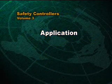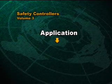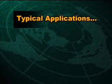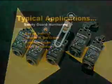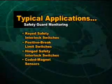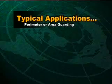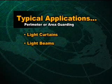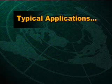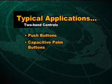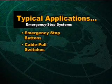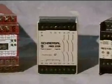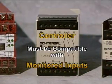We'll start with the type of safety application, which often dictates the type of safety system input components used. Typical safety applications include: movable safety guards using keyed safety interlock switches, positive brake limit switches, hinge safety interlock switches, coded magnet sensors, or safety edges; perimeter or area guarding using light curtains, light beams, pressure mats, or laser scanners; two-hand controls using push buttons, capacitive palm buttons, or optoelectronic sensors; and emergency stop systems using emergency stop buttons, cable pull switches, or safety edges. Different safety controllers are designed to work with these different types of input components, so the chosen safety controller must be compatible with the safety system's monitored inputs.